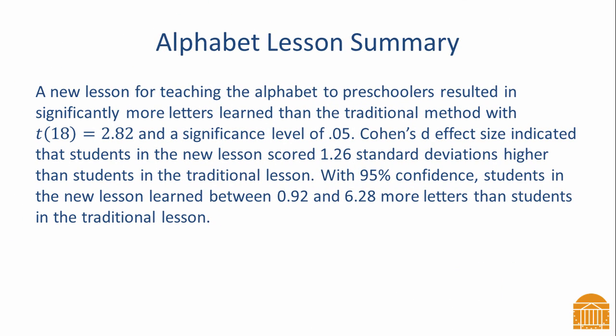Putting it all together, we can write the following summary. A new lesson for teaching the alphabet to preschoolers resulted in significantly more letters learned than the traditional method, with a t-statistic of 2.82 at a significance level of 0.05. Cohen's D effect size indicated that students in the new lesson scored 1.26 standard deviations higher than students in the traditional lesson. With 95% confidence, students in the new lesson learned between 0.92 and 6.28 more letters than students in the traditional lesson.